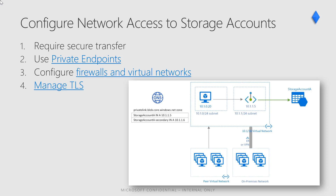You can limit your access to the storage account to requests originating from specified IP addresses, IP ranges, or from a list of subnets in an Azure virtual network. To secure your storage account, you should first configure a rule to deny access to traffic from all networks, including internet traffic, on the public endpoint by default. Then you should configure rules that grant access to traffic from specific VNets. You can also configure rules to grant access to traffic from select public internet IP address ranges, enabling connections from specific internet or on-premises clients.